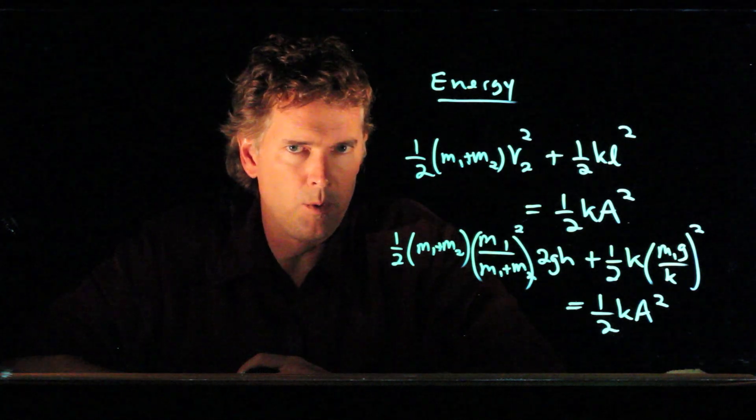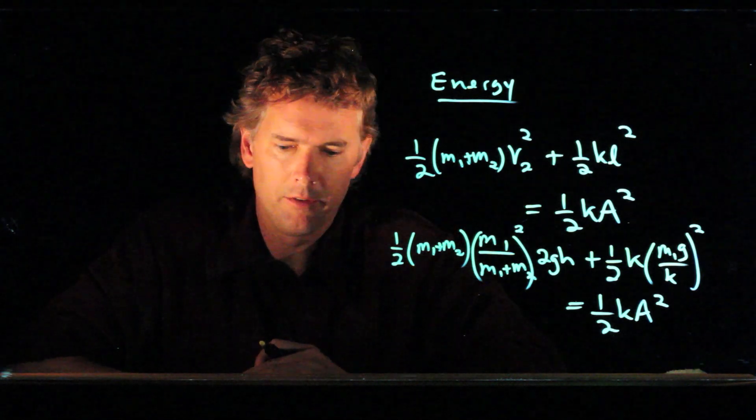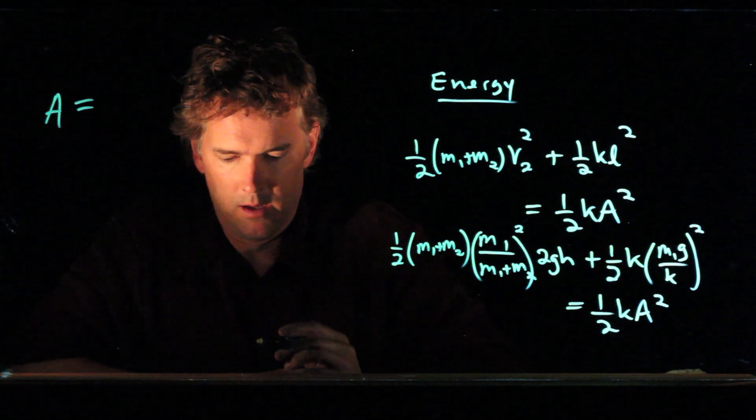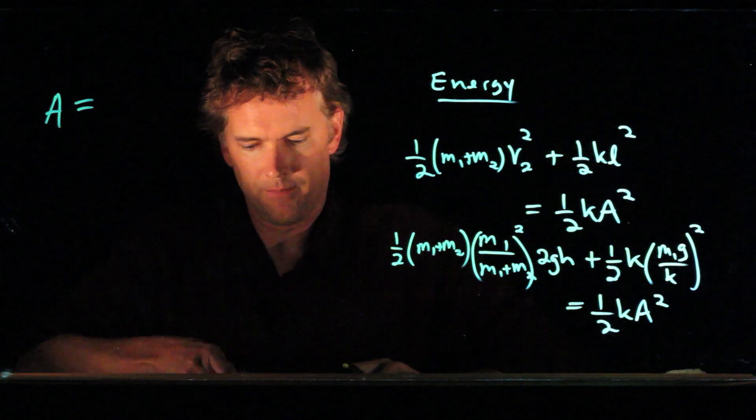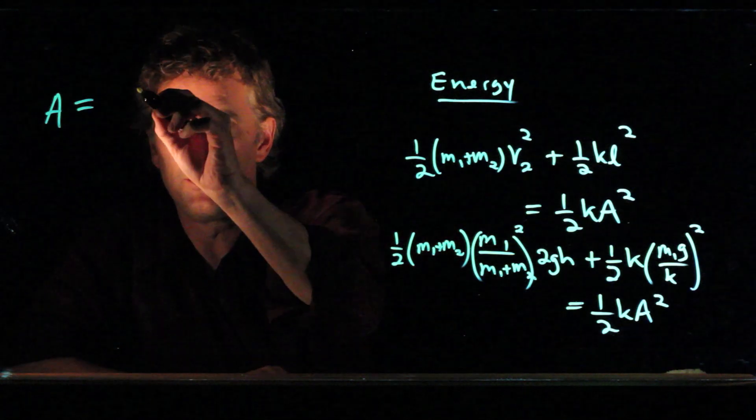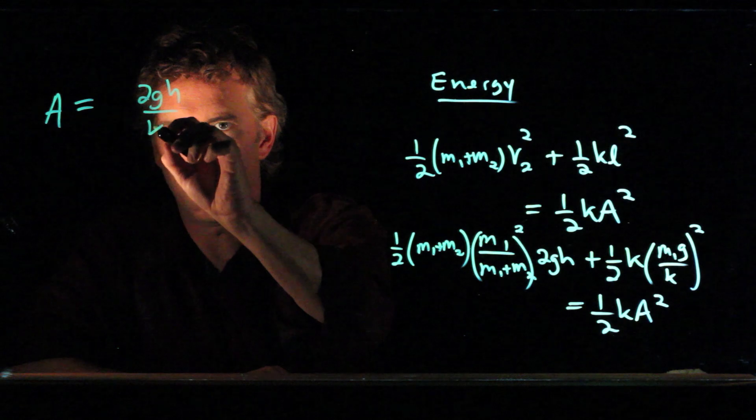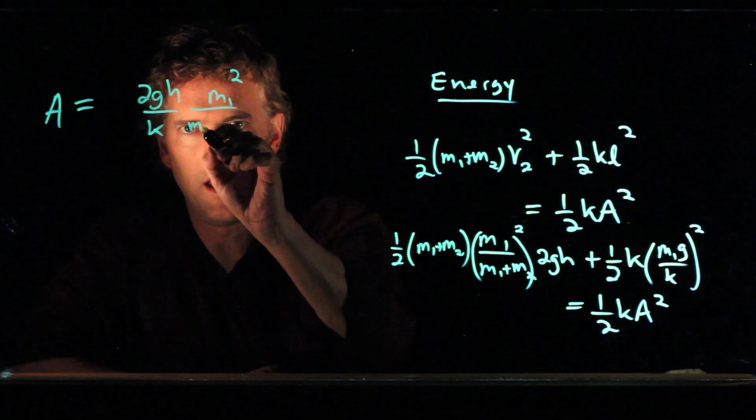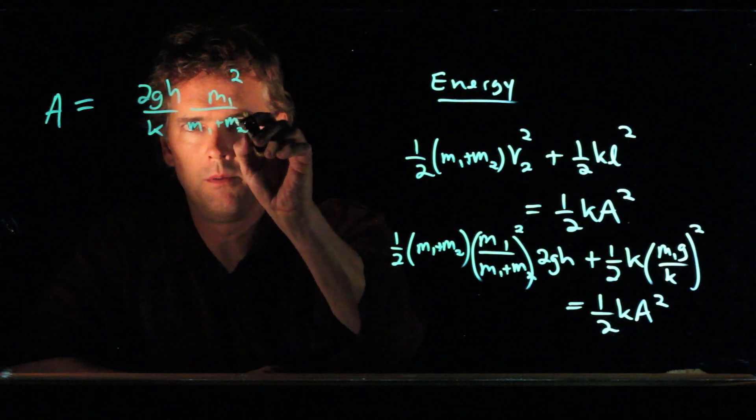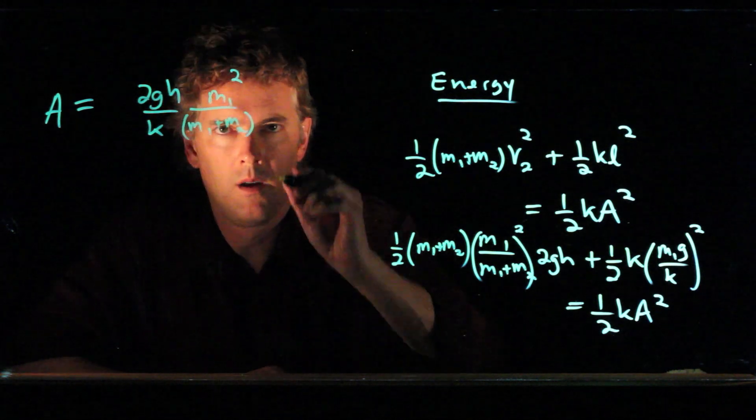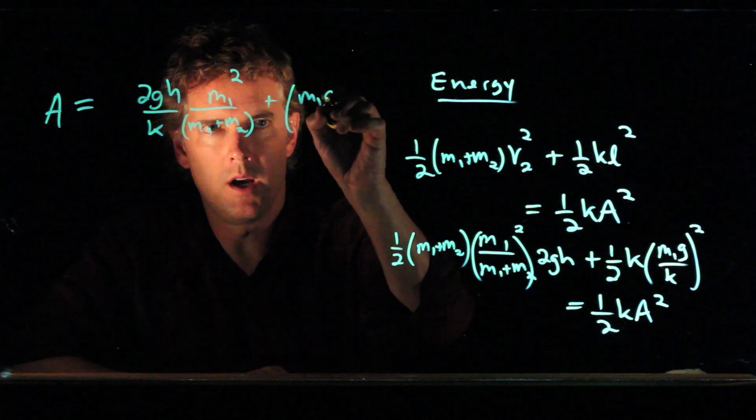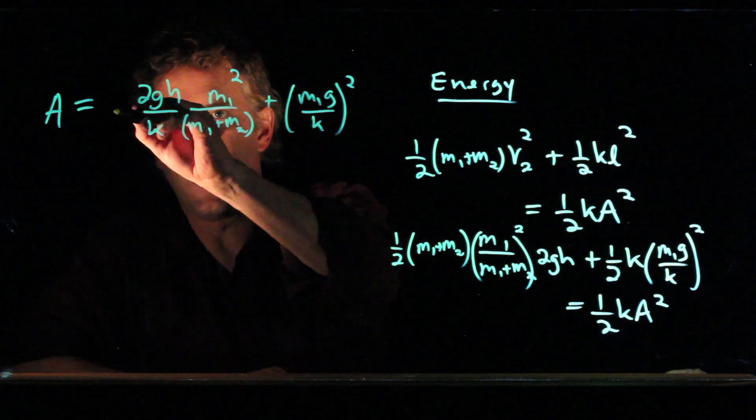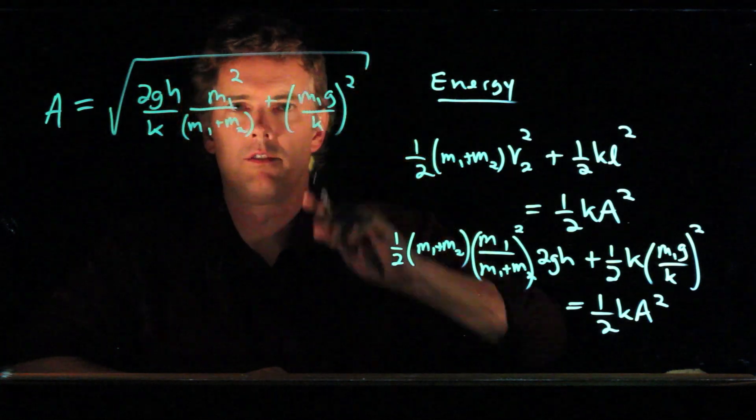I don't want to take away all your fun in doing the math and solving this for capital A, but I will tell you what I got so you can double check. I got A equals the square root of 2GH over K times M1 squared over M1 plus M2, plus M1 G over K squared.